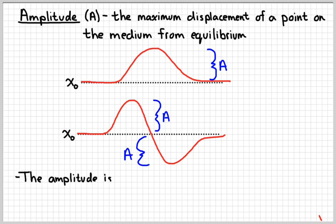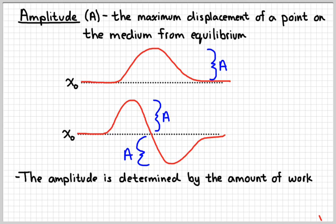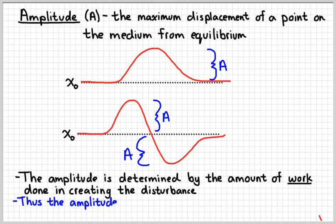The amplitude of a wave is determined by the amount of work done in creating that disturbance. So the more force and the more displacement in creating that disturbance, the higher the amplitude is going to be. And so the amplitude determines the amount of energy that is actually carried by the wave.